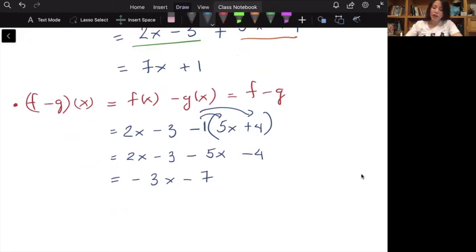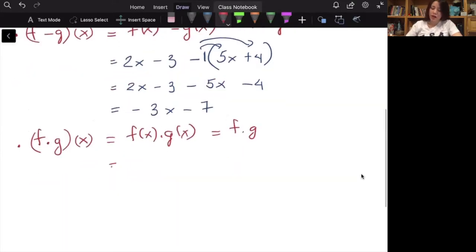Or we can look at the product of two functions. f times g of x, or f(x) times g(x), or f times g, for short. Now we just take function f, which is 2x minus 3, and times the function g, which is 5x plus 4.